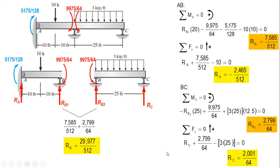The sum gives R-B equals 29977 over 512. The values are the same as those obtained by the other methods — you can watch those videos to verify that the values are the same. From the final values: R-A is downward since it was negative, R-B is upward since it is positive, R-C is also positive upward, and M-A is positive so the beam smiles at A. I hope that you have learned something from this video.